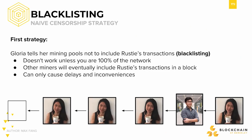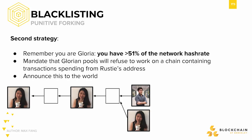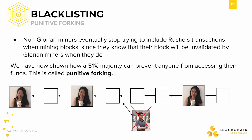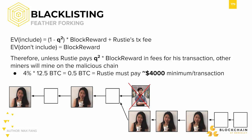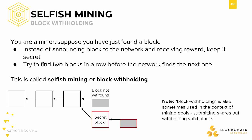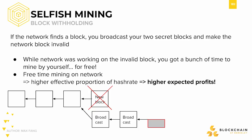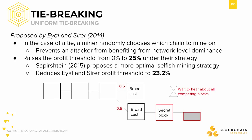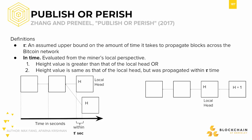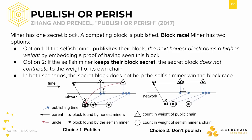We went through blacklisting — what happens if one person tries to censor someone else, and how much hash power they will need to successfully do so. We looked at punitive forking, which works when you have more than 51% of the network hash rate, but we also examined feather forking, which is a way for someone with less than 51% of the hash power to censor someone by using the incentive structures of mining to their advantage. We then took a look at selfish mining, a way for miners to hide their blocks to get a head start on mining, and showed how selfish mining ends up making consensus more difficult for everyone. We looked at defenses against selfish mining, such as tie-breaking and publish-or-perish, but saw that each of these defenses has caveats that prevent it from working perfectly.